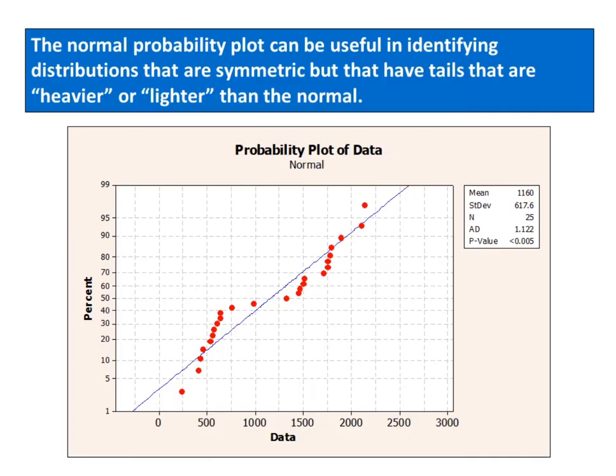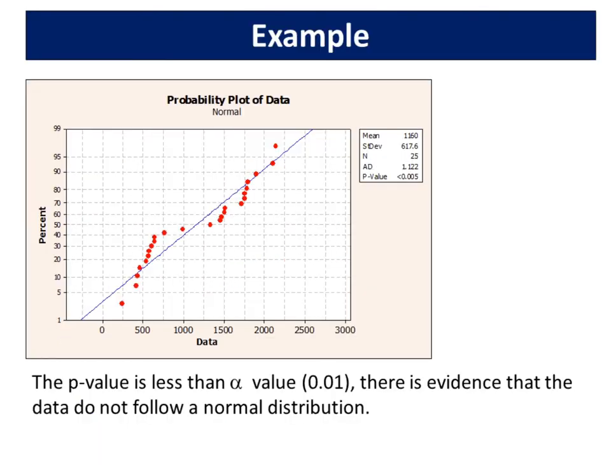On the other hand, the normal probability plot can be useful in identifying distributions that are symmetric but that have tails that are heavier or lighter than the normal.